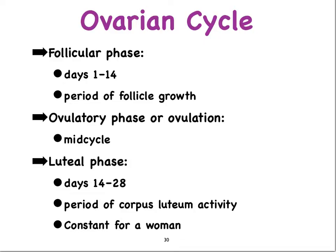Let's take a look at the ovarian cycle first. Let's assume that in a perfect world the ovarian cycle is about 28 days in length. All of us girls know that our ovarian cycles can vary significantly, or they can be very consistent, but can take longer or shorter. But just to learn about the cycle, let's go with an average length of about 28 days.